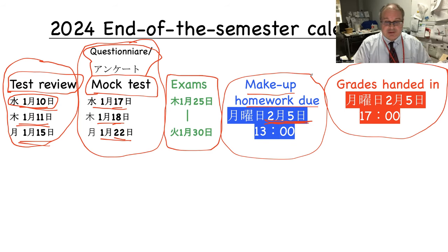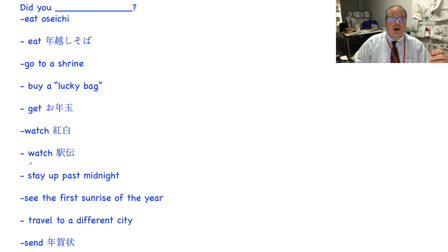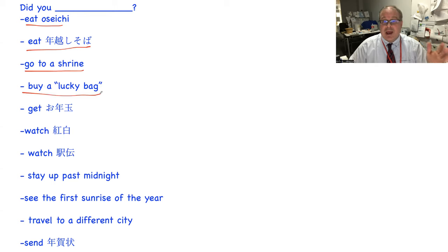Okay so that's what you have to do. Good. Okay now today's first thing you have to do, I want you to tell me about shogatsu - shogatsu yute kudasai. Did you eat oseichi? Did you eat toshikoshi soba? Did you go to a shrine? Did you buy a lucky bag of fukubukuro? Did you get otoshidama? Or I'm sorry, did you watch kohaku? Did you watch ekiden?